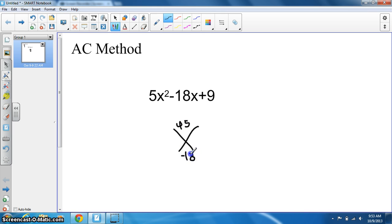This gets difficult because instead of just adding the two multiples of 45, we have to subtract to get negative 18. So this time, we take negative 15 and add that to negative 3 to get negative 18.